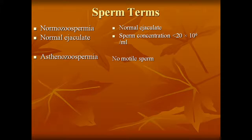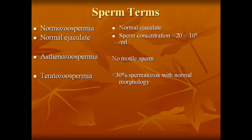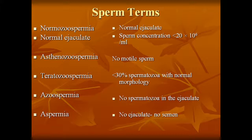Sperm terminology: asthenospermia means no motile sperm; teratospermia means less than 30 percent of sperm with normal morphology; azoospermia means no spermatozoa in the ejaculate; aspermia means no ejaculate; necrozoospermia means dead sperms.